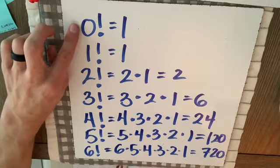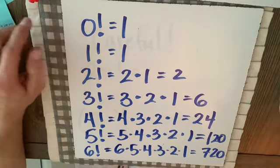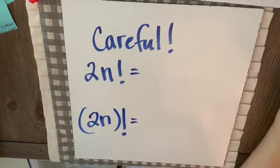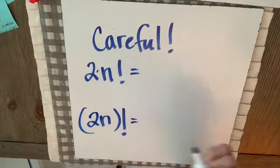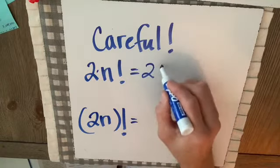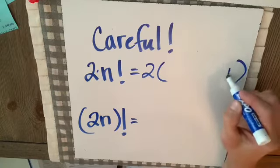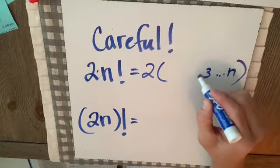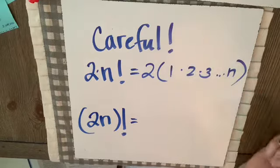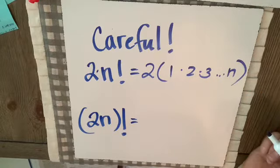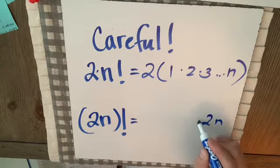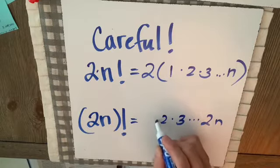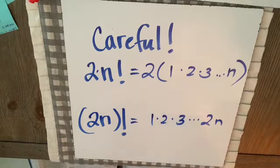Just be wary that 0 factorial is defined as 1 — careful. With factorials, parentheses matter. For example, 2 times n factorial means 2 times the quantity n times (n-1) times … times 3 times 2 times 1. But (2n) factorial would be 2n times (2n-1) times … down to 3 times 2 times 1. We've got to respect parentheses when doing factorials.